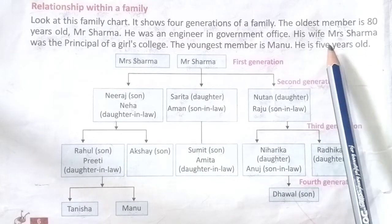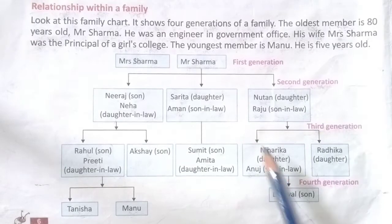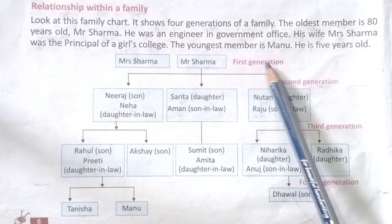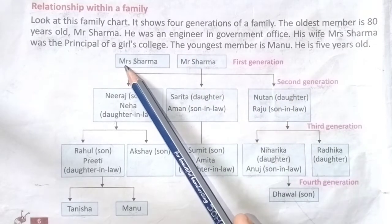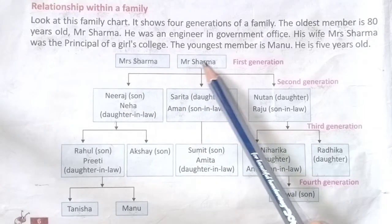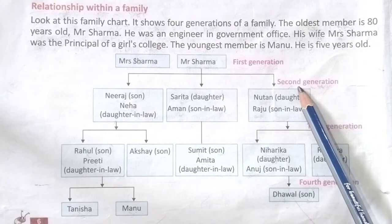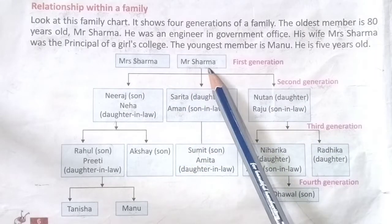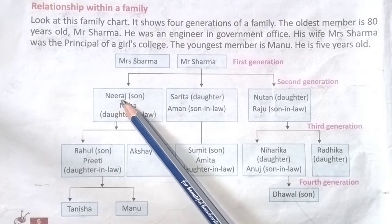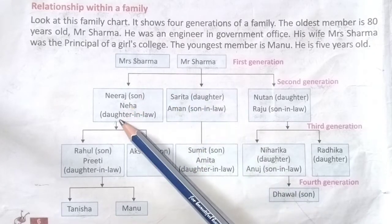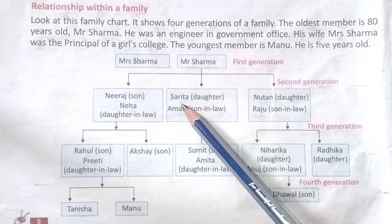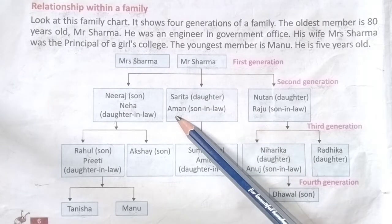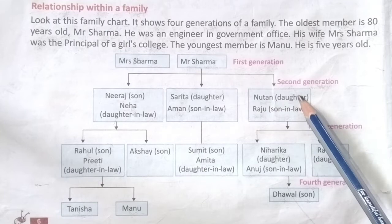This is a family chart. In the first generation there are Mrs. Sharma and Mr. Sharma. In the second generation there are Mrs. and Mr. Sharma's children: first, Neeraj (son) and their daughter-in-law Neha; second, Sarita (daughter) and their son-in-law Aman; third, Nutan (daughter) and their son-in-law Raju.